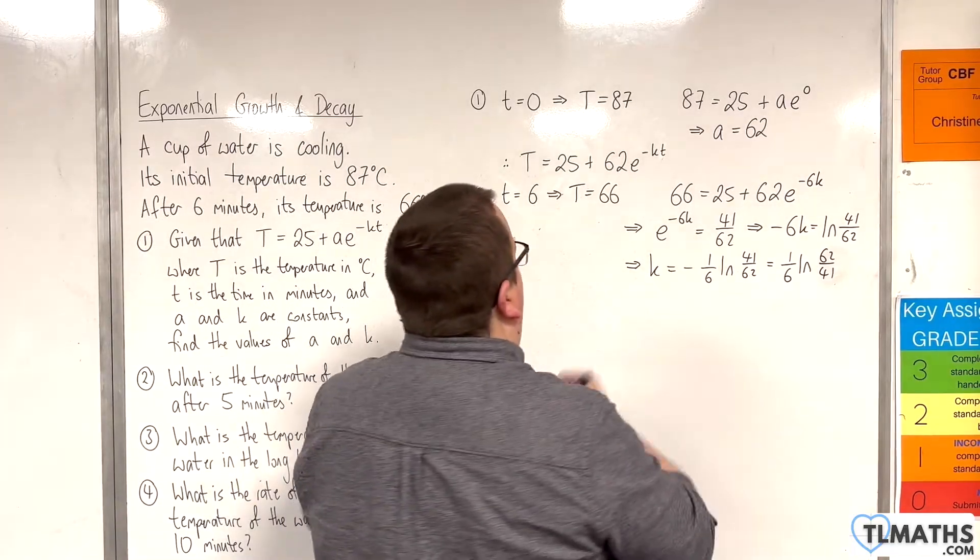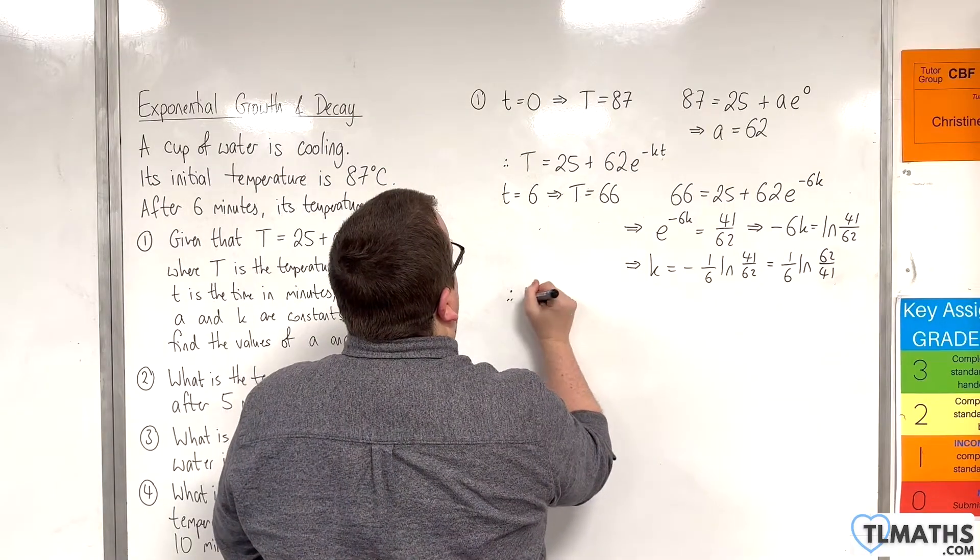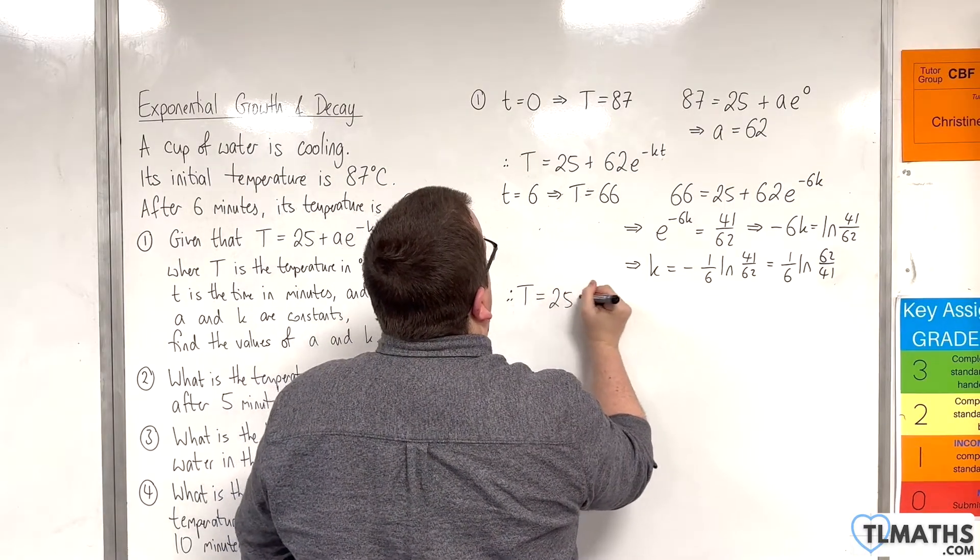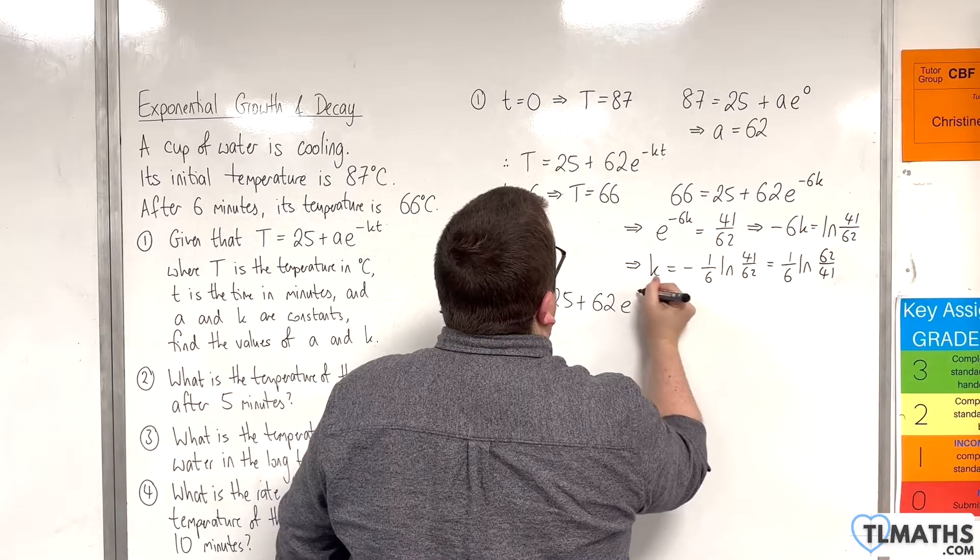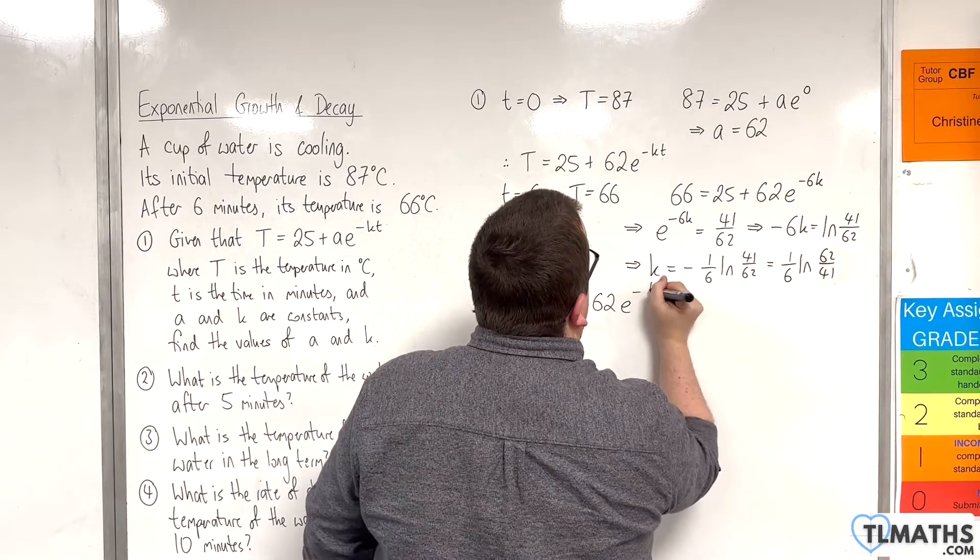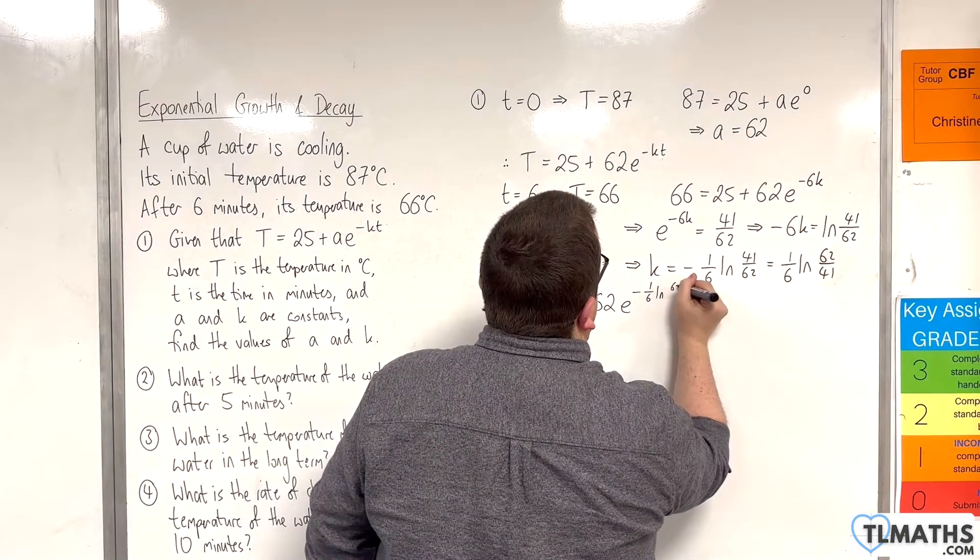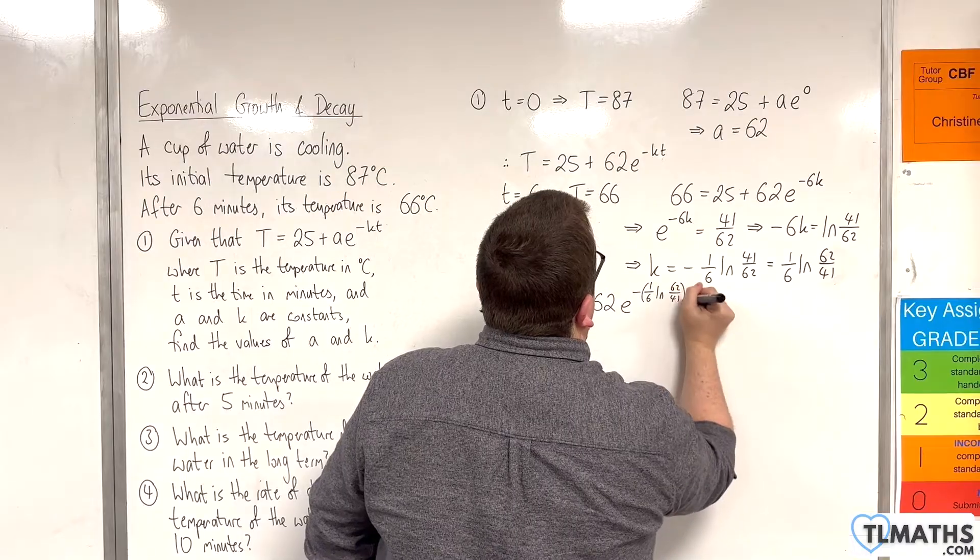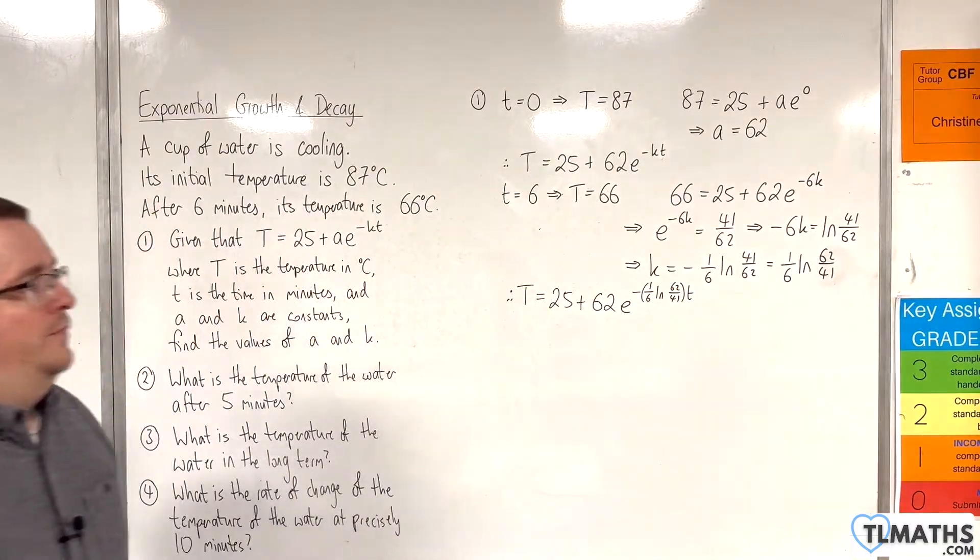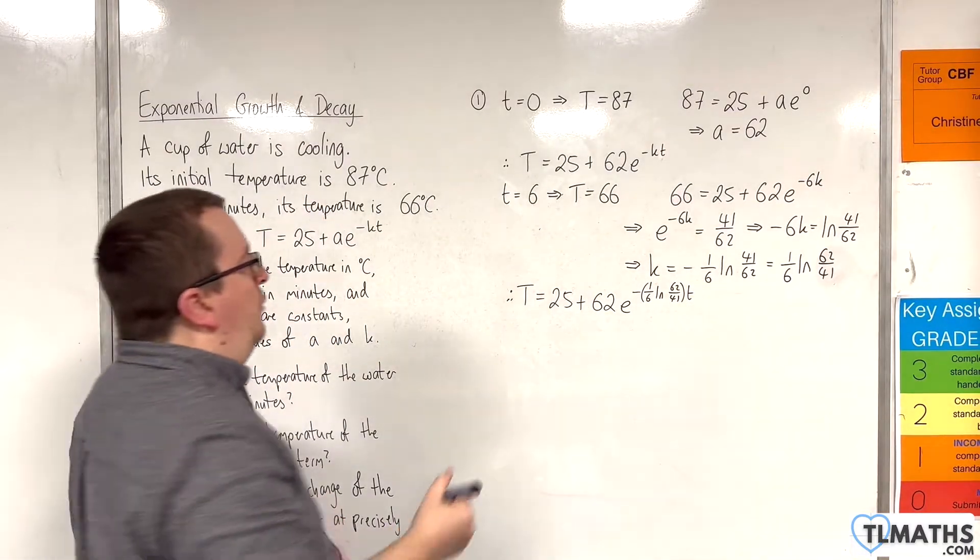So we now have that capital T is 25 plus 62 E to the minus K, so minus 1 sixth natural log of 62 over 41, times by T. Okay? And so this is our formula.